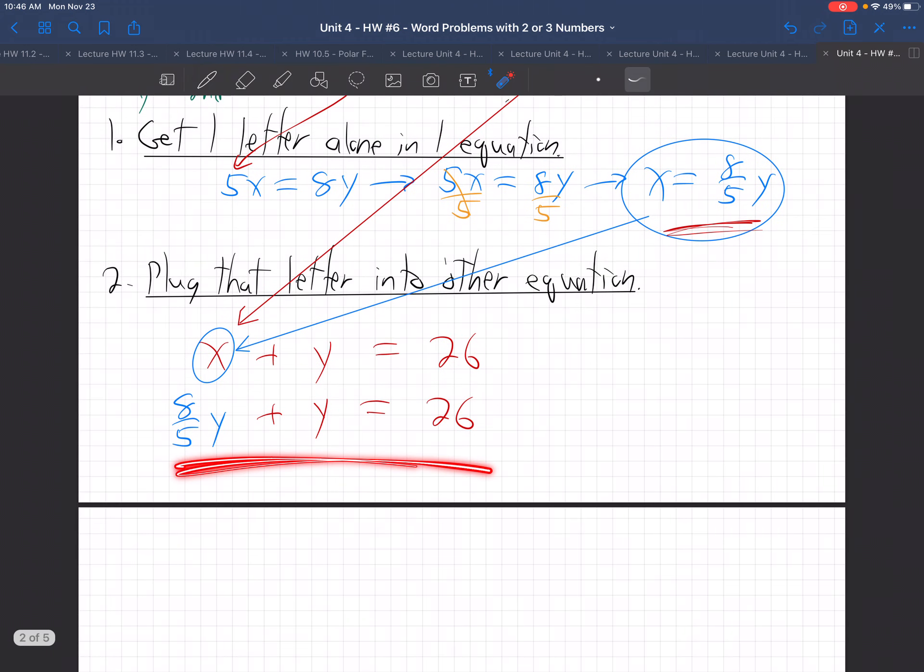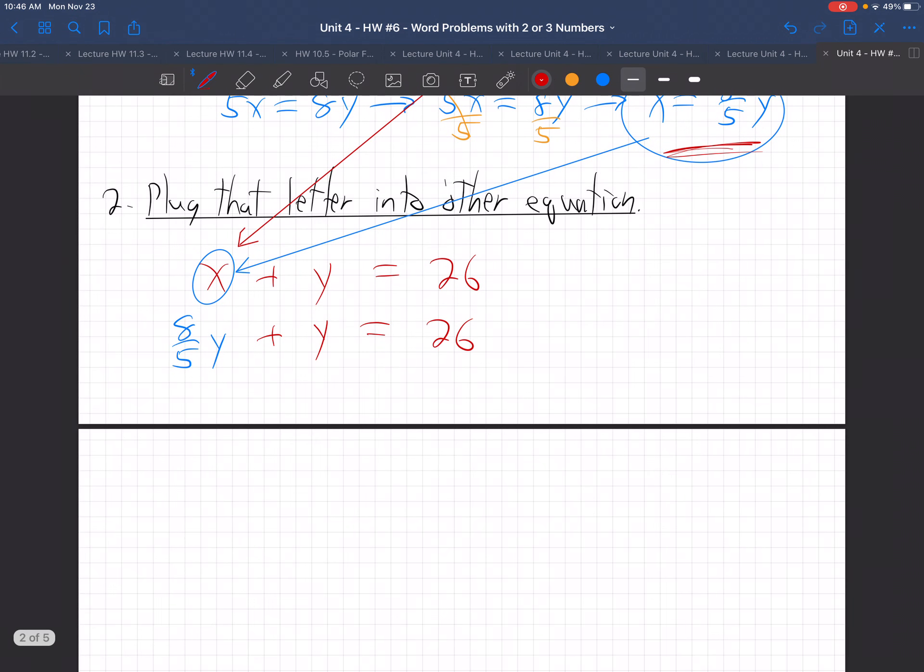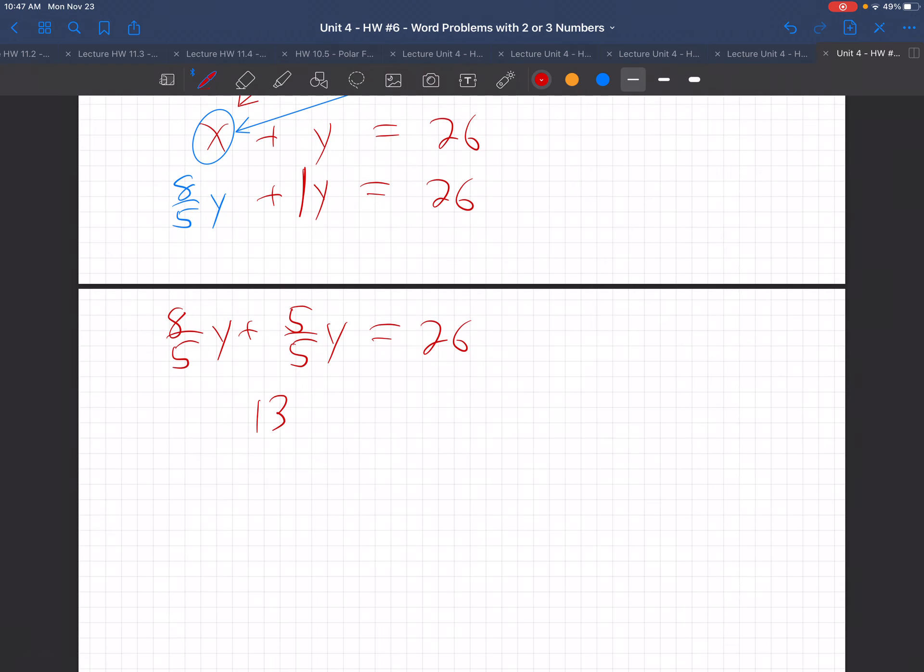I'm going to solve for y. How do we solve this for y? This is really 1y. So it's 8 fifths y plus 5 fifths y, which is 13 fifths y. How do we get rid of that fraction so the y is alone? You multiply by the reciprocal on both sides.